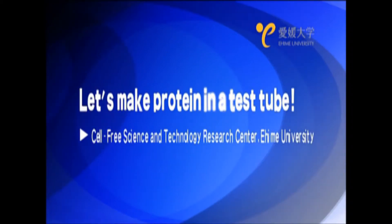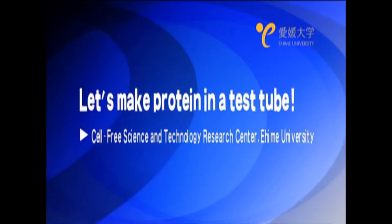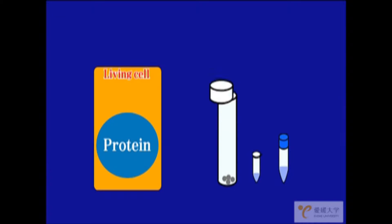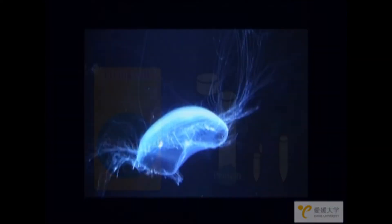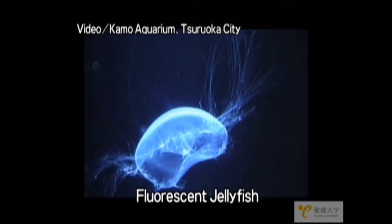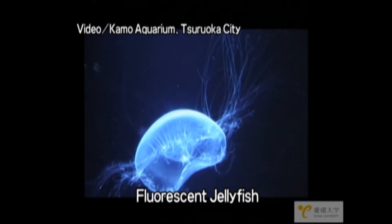We will begin an experiment to make protein in a test tube. We will cause a reaction which will synthesize the protein which exists in a living cell. Today we will use the fluorescent protein from the body of a jellyfish, which produces light.